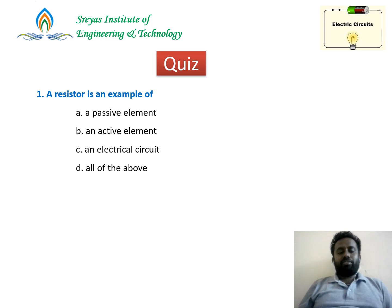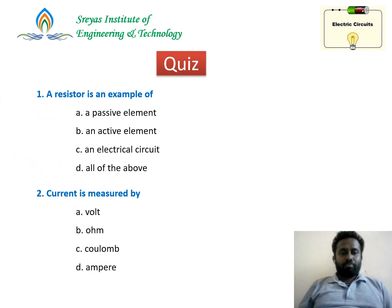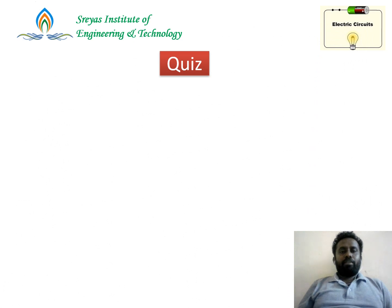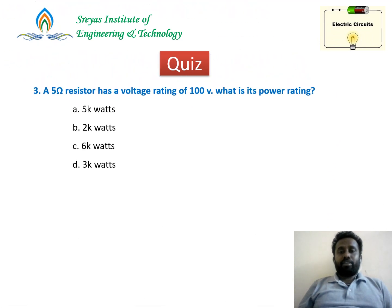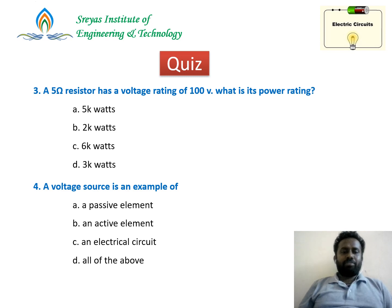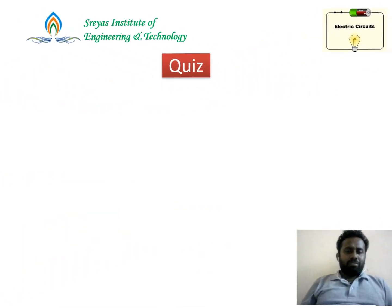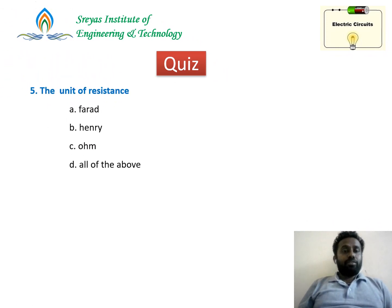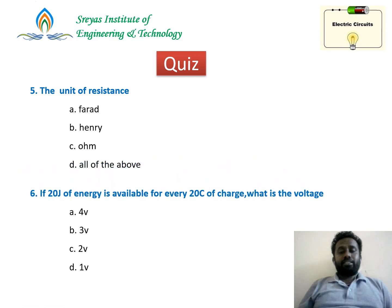Second question: current is measured by — volt, ohm, coulomb, or ampere? What is the unit of current? Third question: a 5 ohm resistor has a voltage rating of 100 volts — what is its power rating? Fourth question: a voltage source is an example of — passive element, active element, or electrical circuit? Fifth question: what is the unit of resistance — Faraday, Henry, ohm, or all of the above? Sixth question: if 20 joules of energy is available for every 20 coulombs of charge, what is the voltage? V = W/Q.